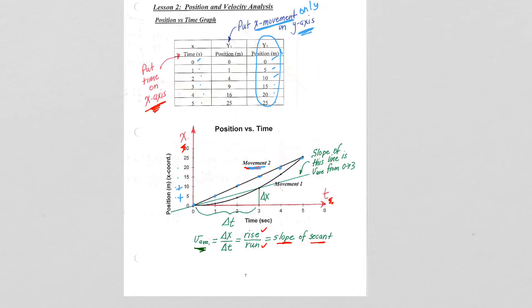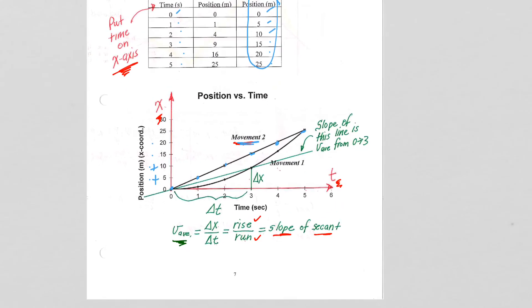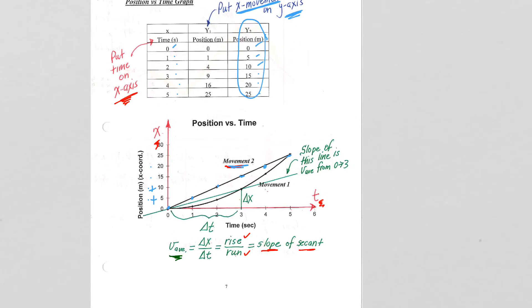To give you kind of a look ahead as to what we can do with this, the one thing we can do with it is actually compare average velocities over different time intervals without making any calculations whatsoever. Let me show you how that works. Let's take a look at movement one. Movement one is my purple.